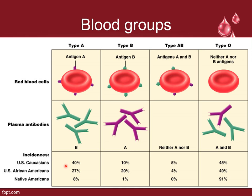Looking at the percentage of different blood type classifications: among Caucasians, most have type O at 45%, followed by type A, and very few have type AB. African Americans similarly have mostly type O followed by type A. Type O is most prevalent in most demographics including Native Americans, with type A second, and 0% type AB in some groups.